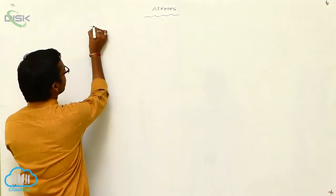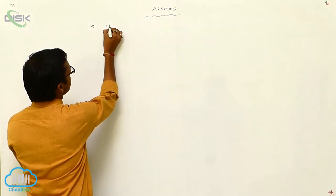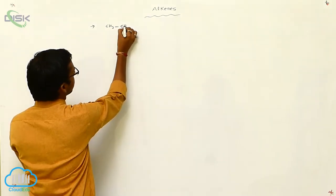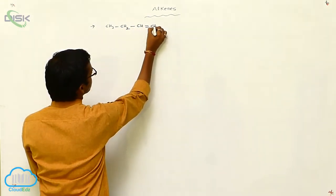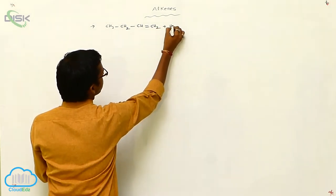Another example for Markovnikov rule is if you consider another unsymmetrical alkene: CH₃-CH₂-CH double bond CH₂. This is reactive with HCl.